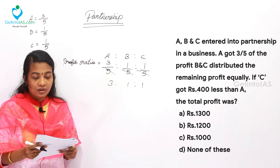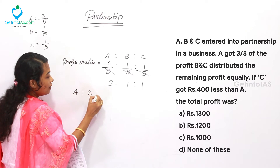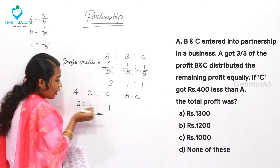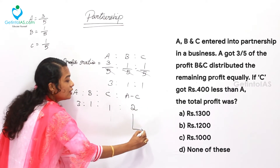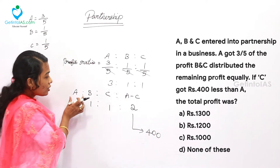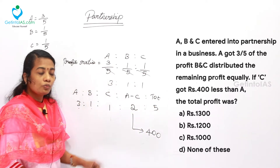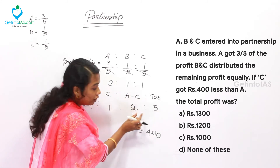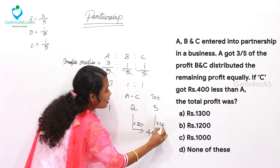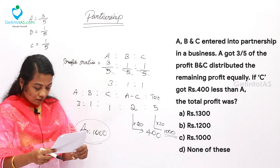C got Rs. 400 less than A, so A minus C equals 3 minus 1 equals 2 units, which corresponds to Rs. 400. Total units A+B+C equals 3+1+1 equals 5 units. If 2 units = Rs. 400, then 1 unit = Rs. 200, and 5 units = Rs. 1,000. The total profit is Rs. 1,000, given in option C.